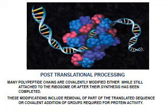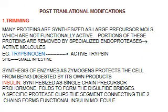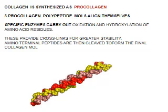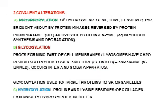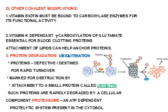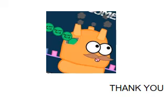Very importantly, we also have to learn about post-translational modifications. I have given separate headings and details under these. Covalent alterations include phosphorylation, glycosylation, and hydroxylation. Then we have other covalent modifications and protein degradation. These are the different points to remember regarding translation. Figures are very important, and I have also made sure to give you the important questions which have come in the university exam and how to attempt these questions.